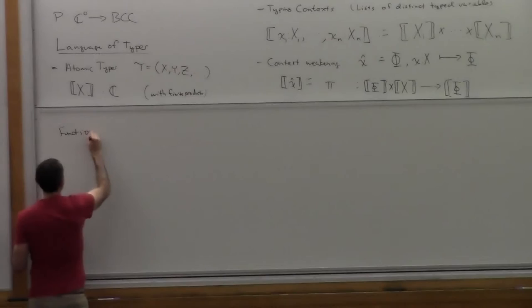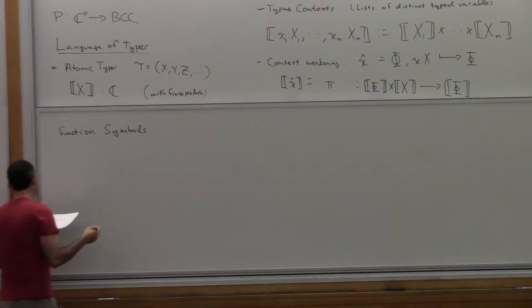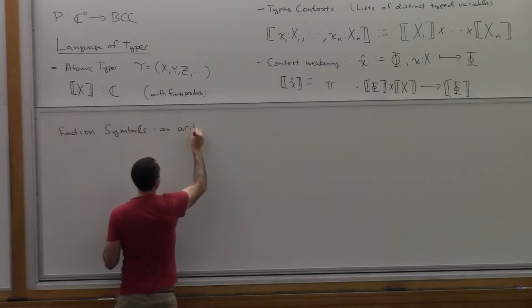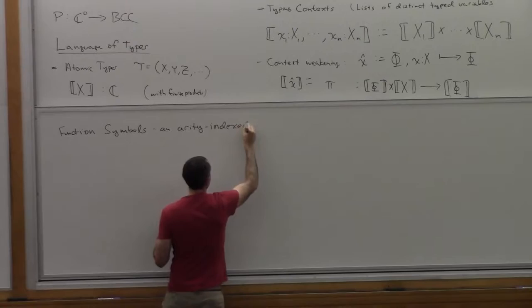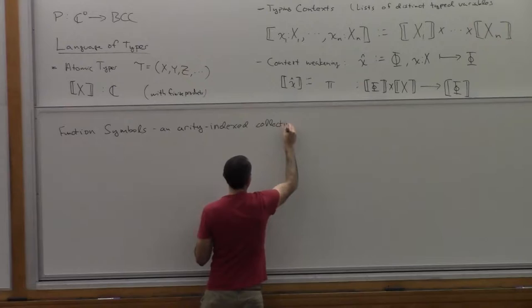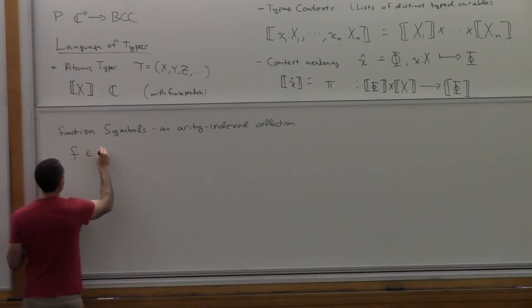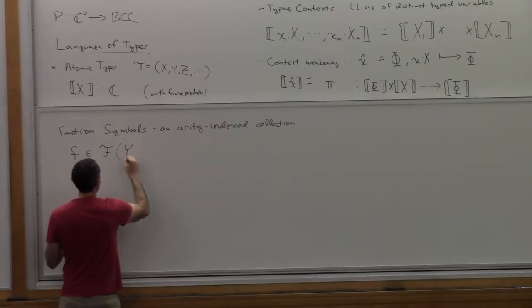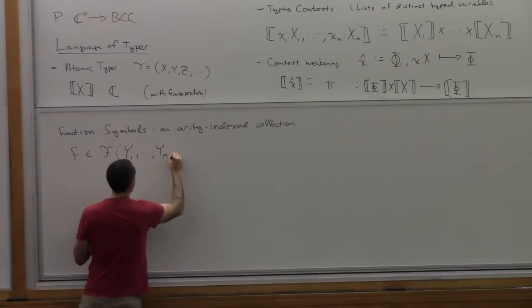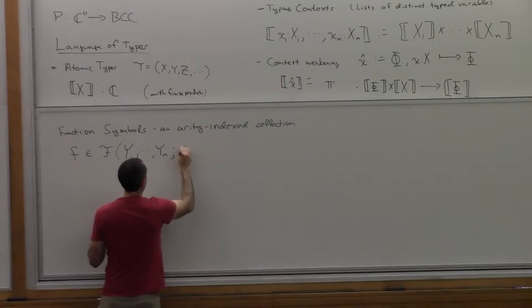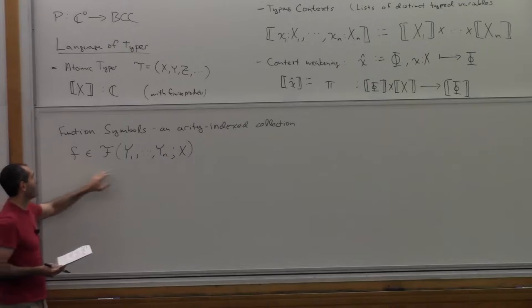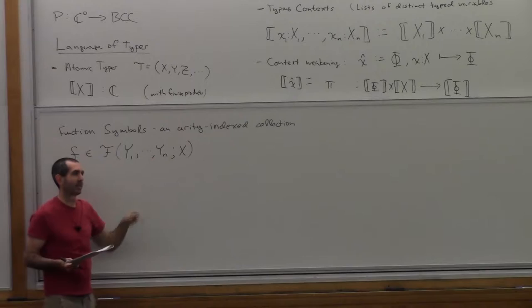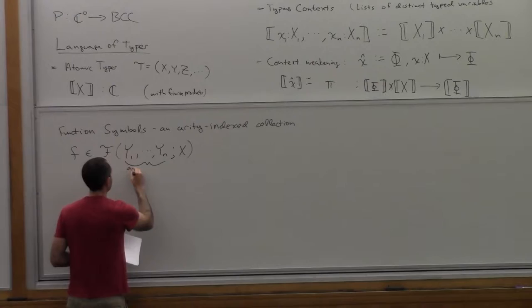Now we have an operation on contexts called weakening. I'm going to write the context Phi extended by x, with a little hat over x, to mean the map that takes the extended context and forgets about x — it gives us back the context without that variable. This notation comes from linear algebra where you suppress one dimension by putting a hat over it.